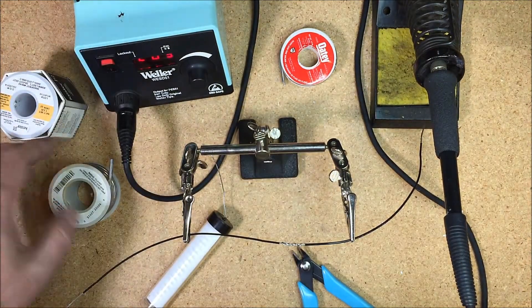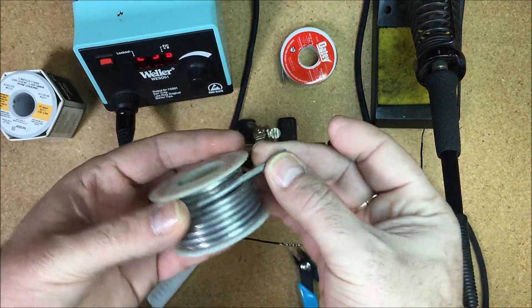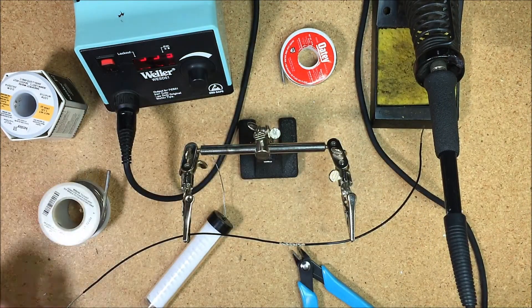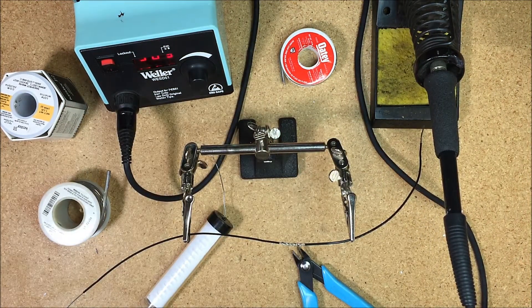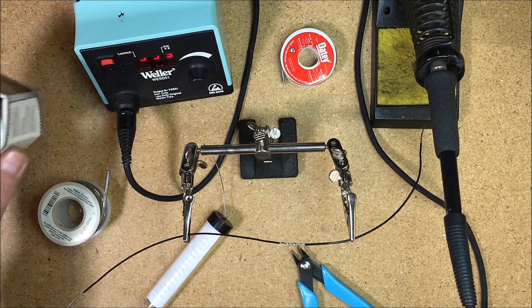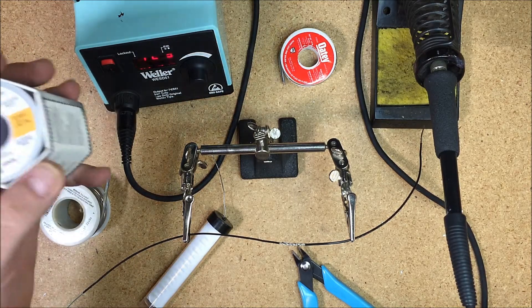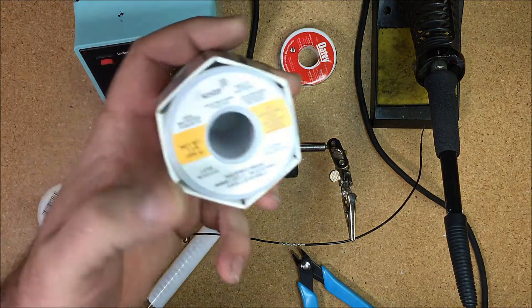Nor should you go down to the hardware store and buy something that looks like this - big, fat, ugly stuff. We've picked the appropriate type that we like to use. We usually use Kester, but whatever brand doesn't matter too much. This is just a standard rosin core solder.